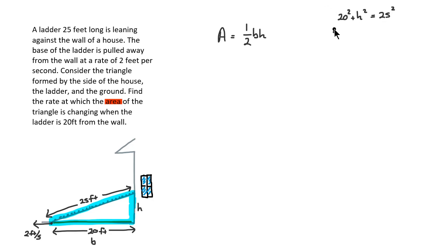20 squared is 400 and 25 squared is 625. I will subtract 400 from both sides. H squared will be equal to 225 and that means that the height at this moment is actually the square root of 225, which is 15, at least the positive square root is anyway. Okay, so that's going to be good to know for sure.